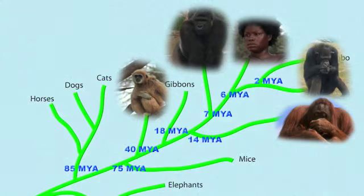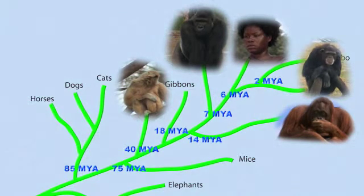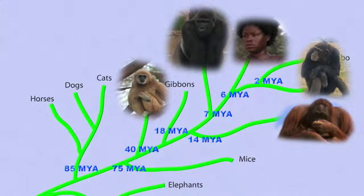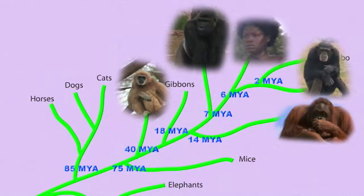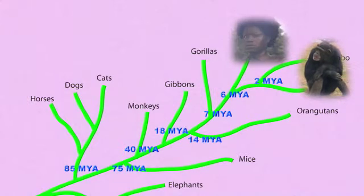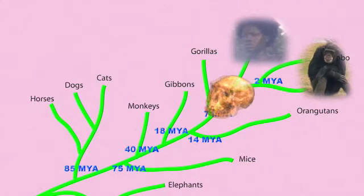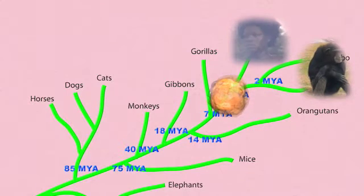A common misconception is that some modern species are descended from other modern species. This is rarely the case. Instead, closely related modern species evolved from a common ancestor — that is, neither one nor the other. Humans did not come from chimps. Both humans and chimps came from a creature that had more primitive features than either modern humans or modern chimps.